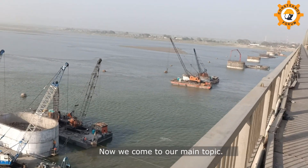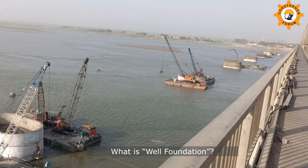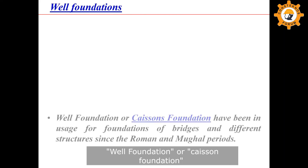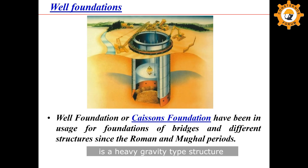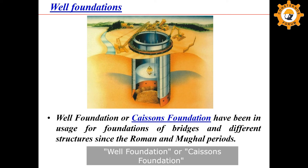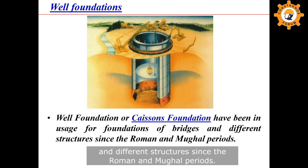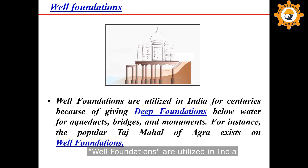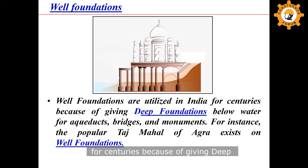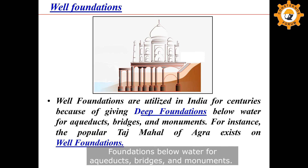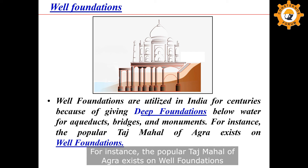Now we come to our main topic — what is well foundation? Well foundation or caisson foundation is a heavy gravity type structure which is very stable in deep river bed. Well foundations have been in usage for foundations of bridges and different structures since the Roman and Mughal periods. Well foundations are utilized in India for centuries for giving deep foundations below water for aqueducts, bridges, and monuments. For instance, the popular Taj Mahal of Agra exists on well foundation.